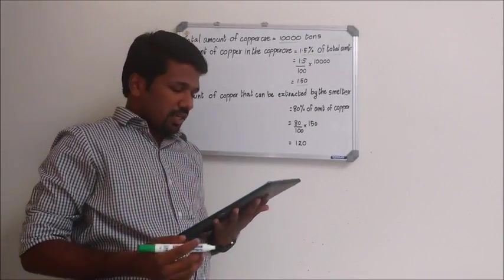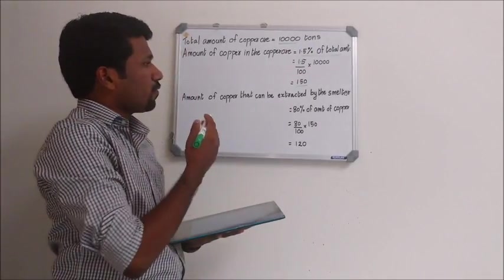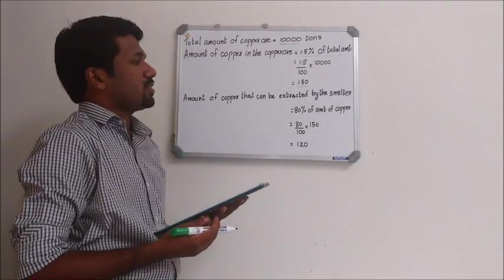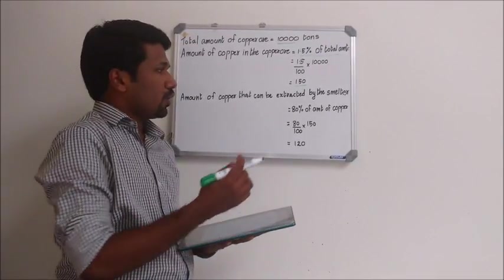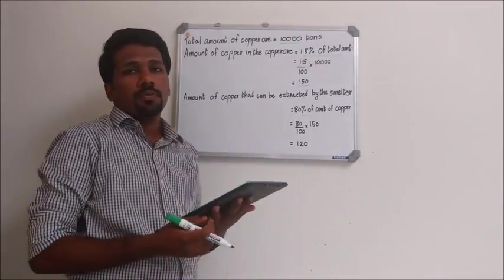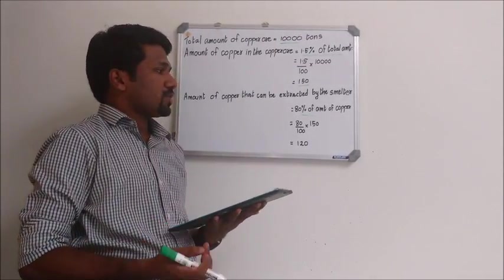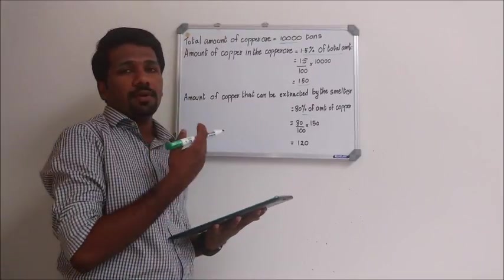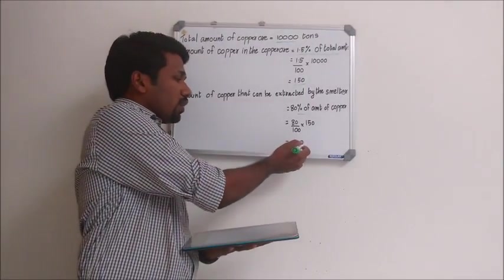Again in the second sentence, it is given that amount of copper that can be extracted by the smelter per day is equal to 80% of amount of copper. We have found amount of copper as 150. So 80% of 150, that is 80 by 100 into 150, equal to 120.